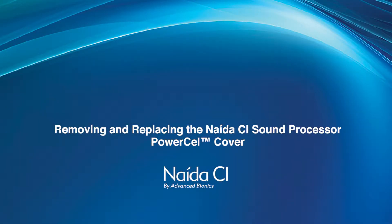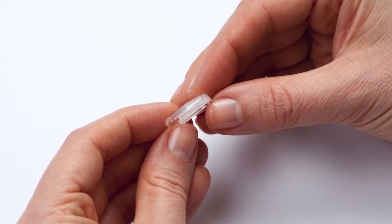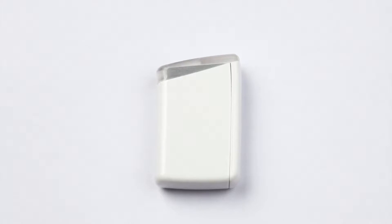Removing and replacing the Naida CI Sound Processor PowerCell Cover. The Naida CI PowerCell cover should be utilized to prevent debris from accumulating on the battery connector.